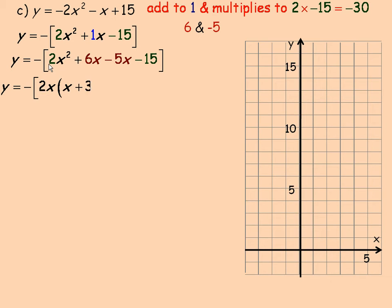And so we common factor the first two terms. We can common factor a 2x out. And so we have 2x and then 2x divided into 2x squared gives you x. 6x with a 2x factored out is 3.